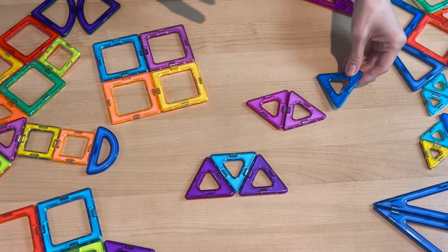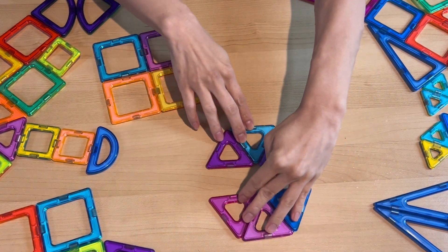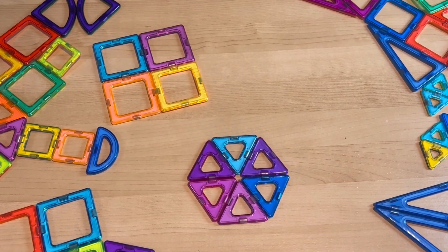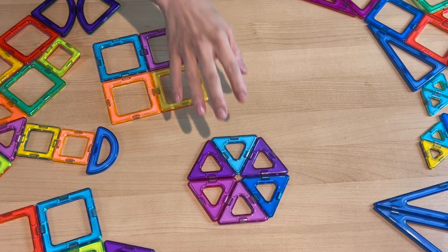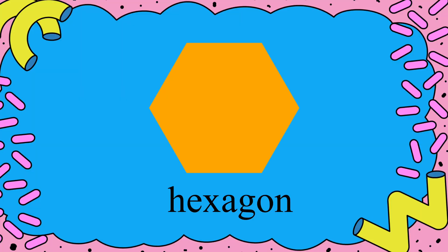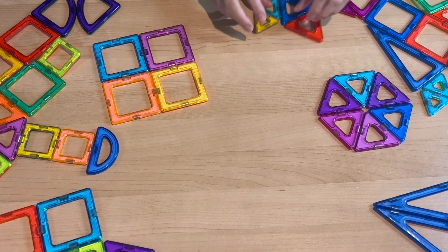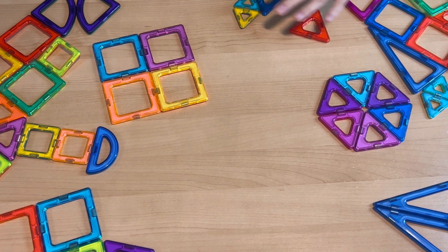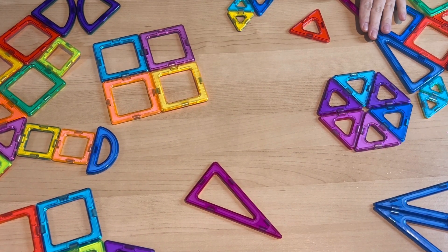Let's make another trapezoid here and combine them together. Now it's a hexagon.